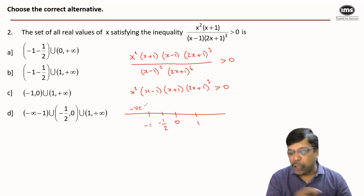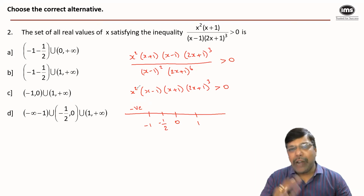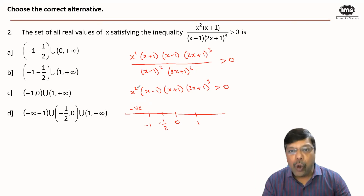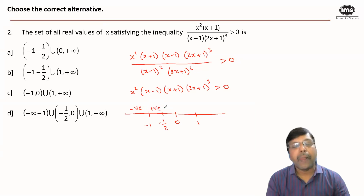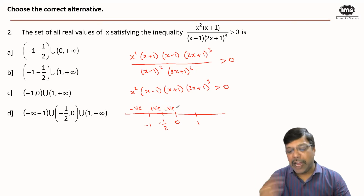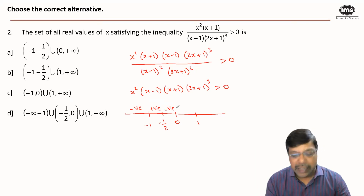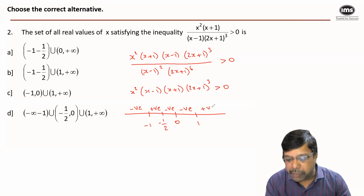For a value between -1 and -1/2, say x = -0.75, the expression becomes positive. Substituting a value between -1/2 and 0, say x = -0.25, makes the expression negative. A value between 0 and 1, say x = 0.5, also gives a negative expression. And substituting a value greater than 1, say x = 2, undoubtedly makes the expression positive.